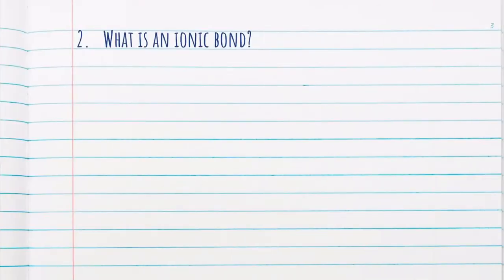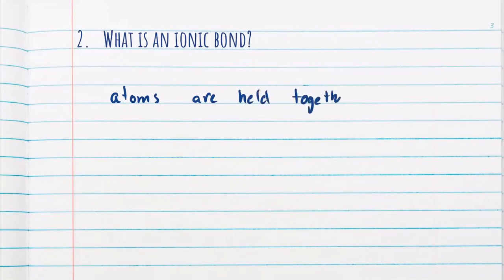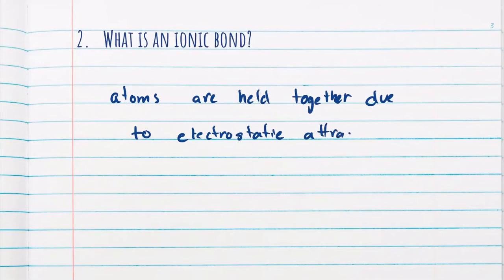Our next question asks what is an ionic bond? The main difference between an ionic bond and a covalent bond is that atoms are held together due to electrostatic attraction. Atoms with a high electronegativity are able to take an electron from another atom, creating a cation and an anion — just like on a magnet, a positive side and a negative side. The positive and negative charge is what holds them together.